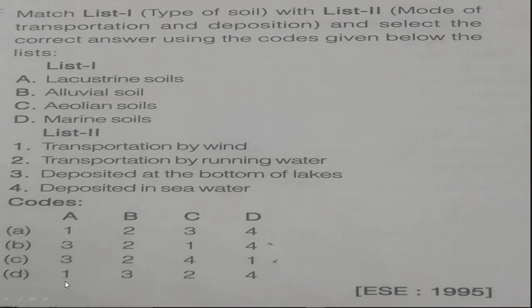Next. So same thing. This is from IES. Lacustrine soils are transported by lakes or still water. So A will be 3. There will be two chances, either B or C.